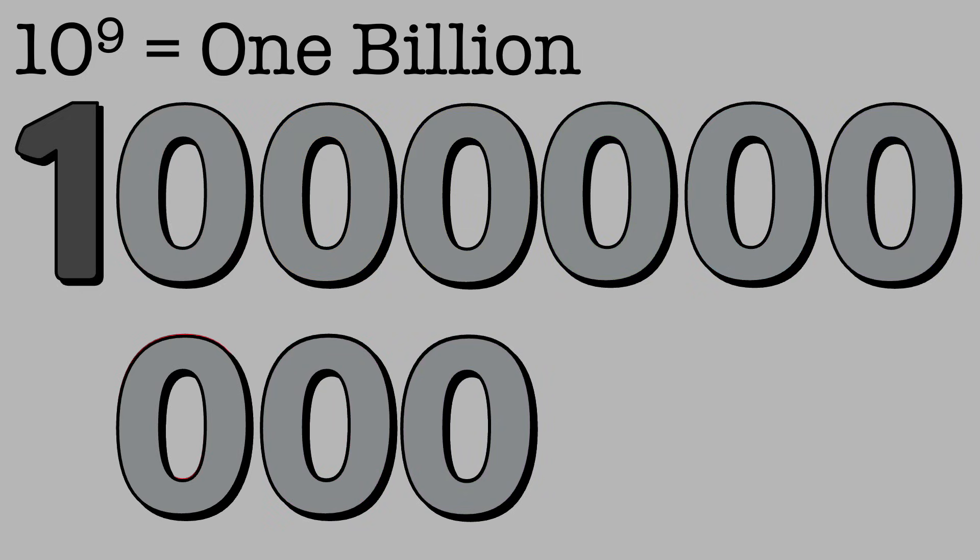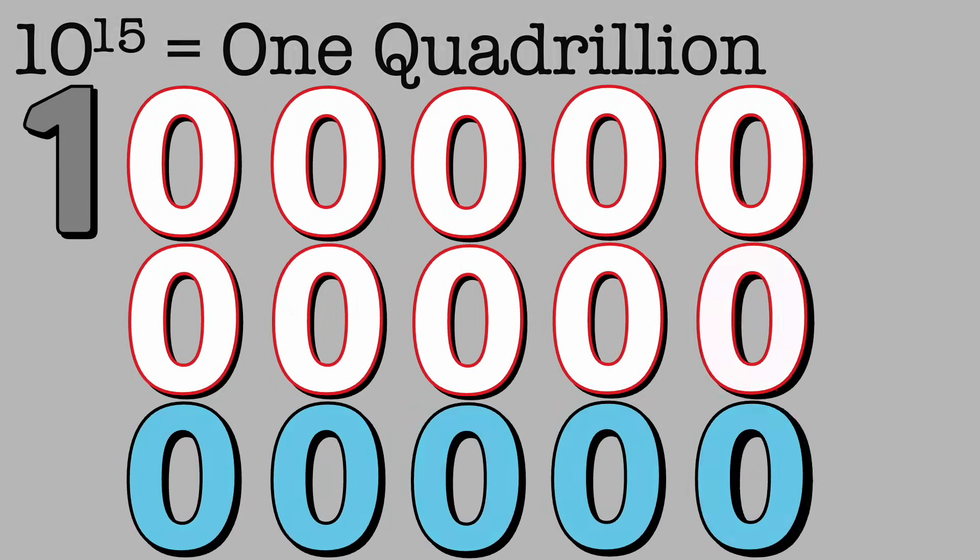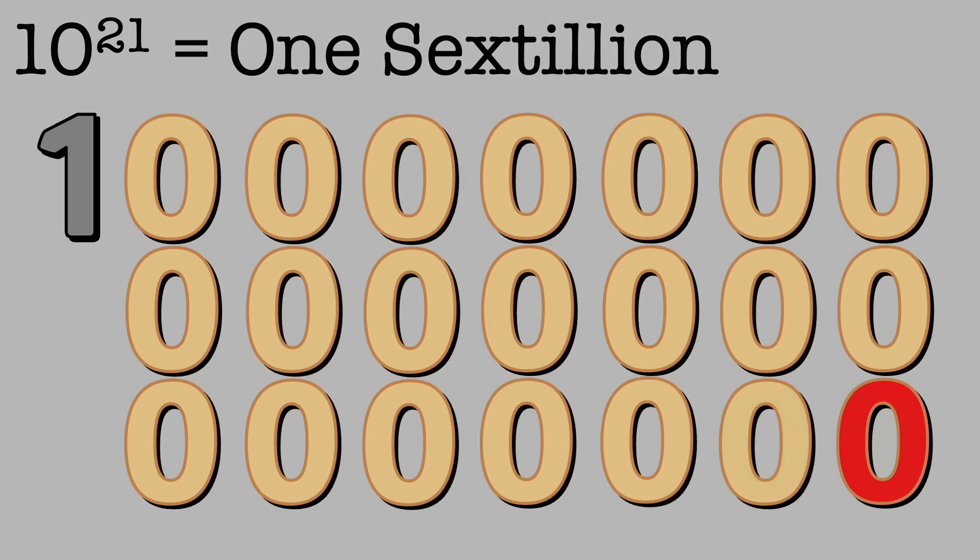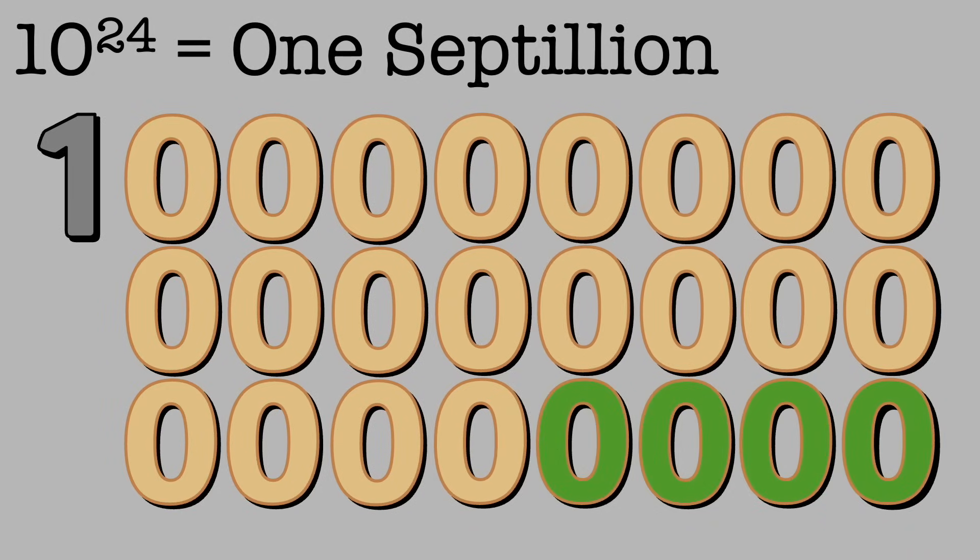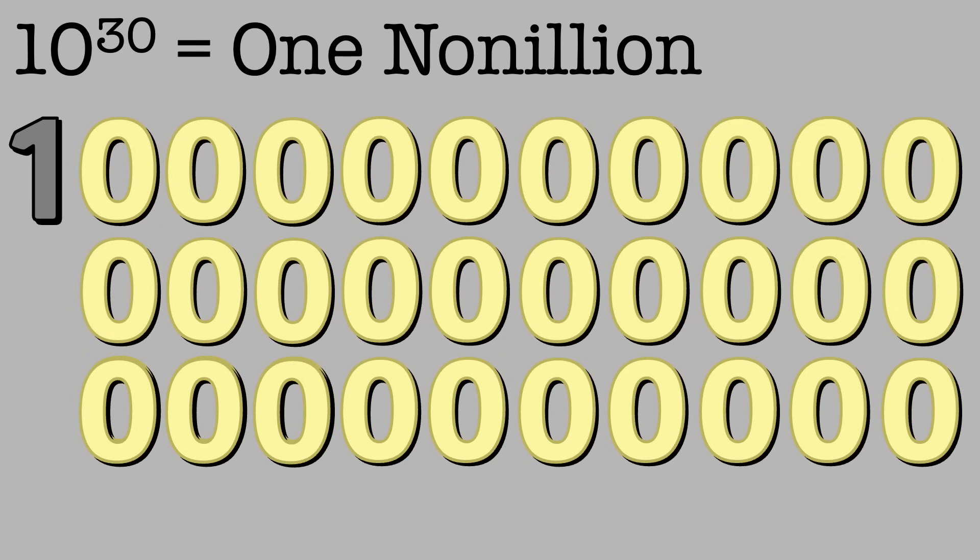Let's continue where we left off. 1 trillion, 1 quadrillion, 1 quintillion, 1 sextillion, 1 septillion, 1 octillion, 1 nonillion, 1 decillion.